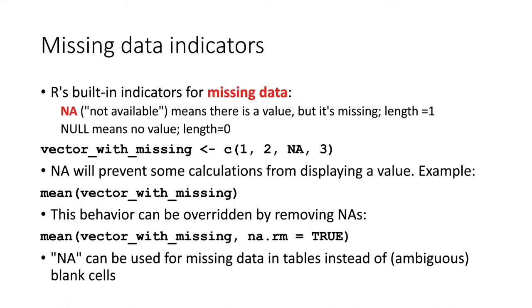For example, if we try to take the average of a vector, but one of the items in that vector is the missing data NA, then the mean function will fail to produce a numeric answer. In fact, it'll tell us the answer is not available.